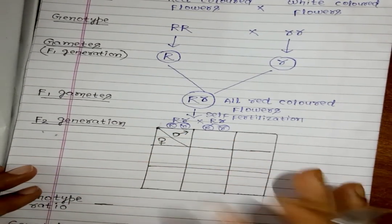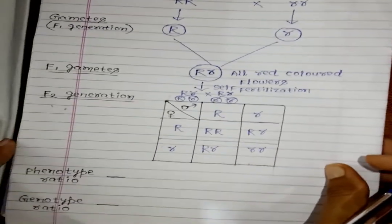So this we will take in the F2 generation. This is the checker box. So this is the representation of male and this is the representation of female. Here we will take capital R, here small r, here capital R, here small r. So capital R and capital R will be combined together forming capital R capital R. It will form capital R small r. Here capital R small r. This cross will be small r small r.